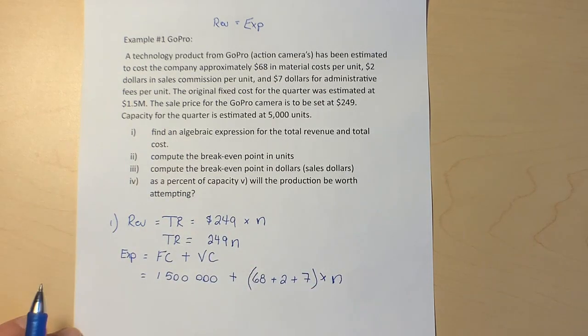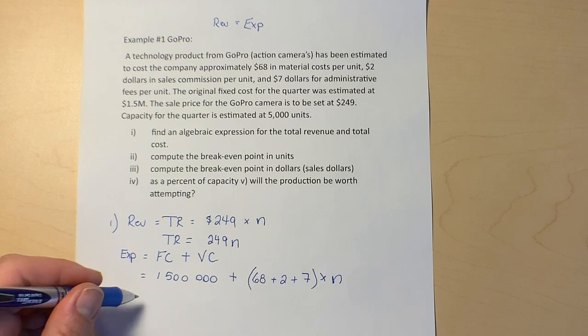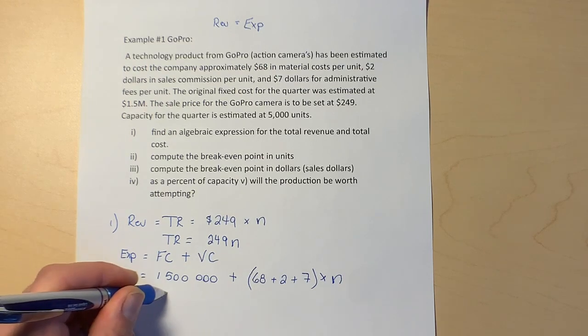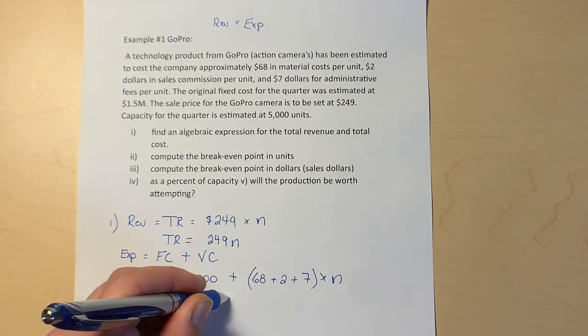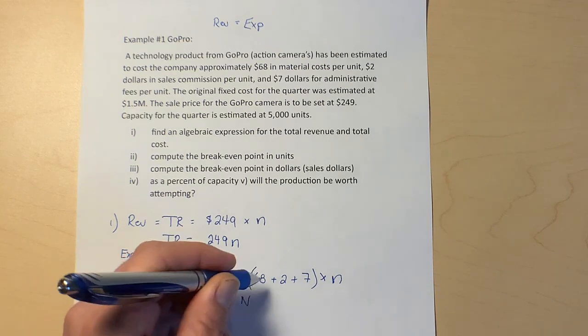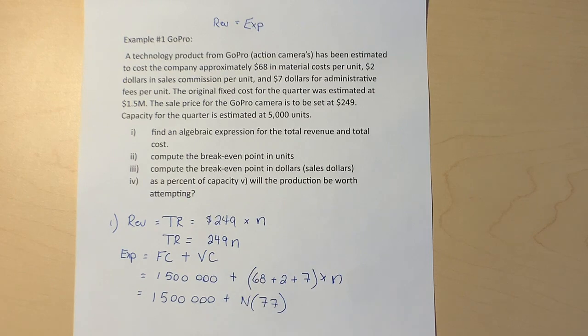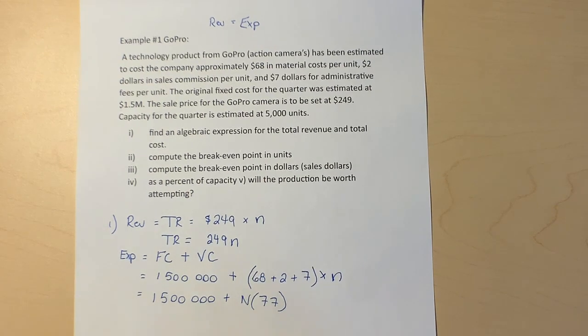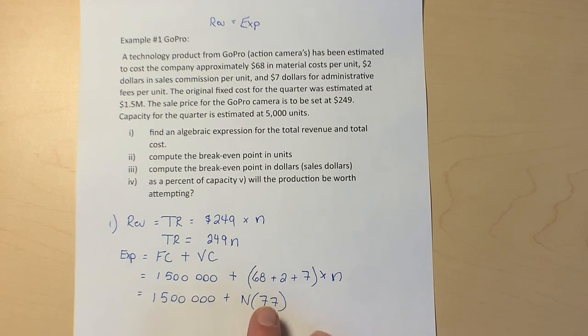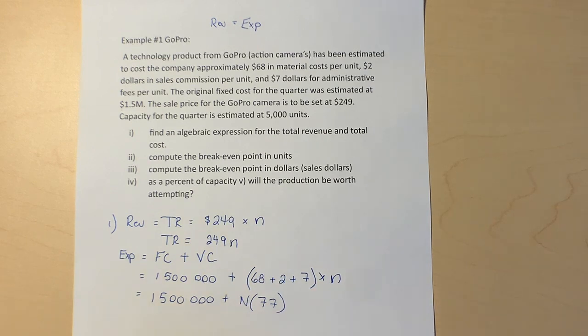We're going to multiply all of those times the number of units that we sell. I'm going to clean that up a little bit and just call it 1.5 million plus n times 77, or 77n either way. 68 plus 2 plus 7 gives us 77.